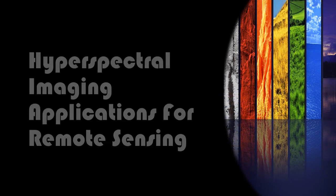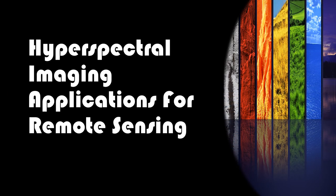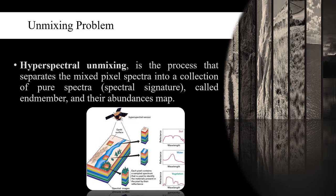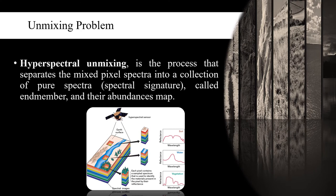Next, we focused on hyperspectral imaging applications for remote sensing. Unmixing problem is the main application we focus under the hyperspectral unmixing for remote sensing. Hyperspectral unmixing is the process of separating mixed pixel spectra into a collection of pure spectral signatures called endmembers and their abundance maps.